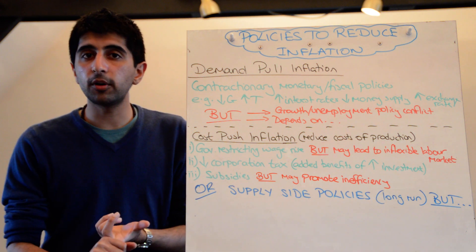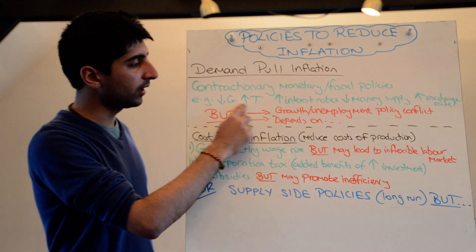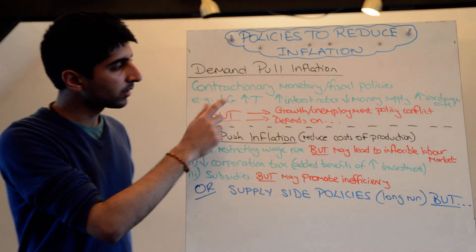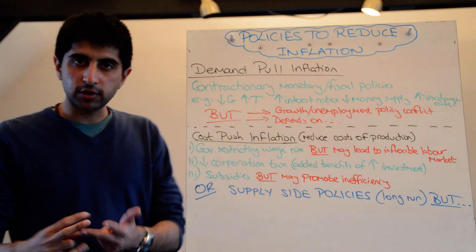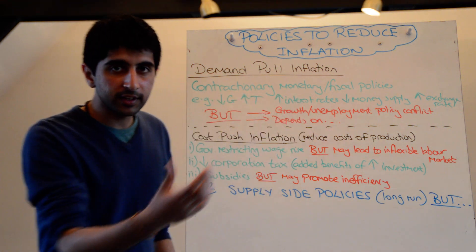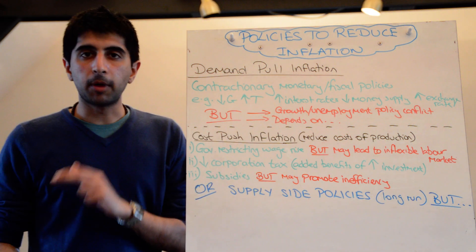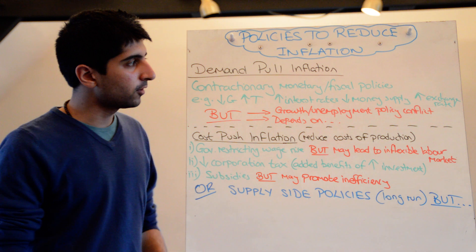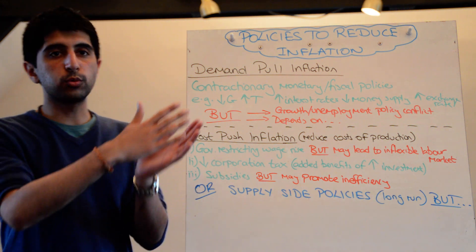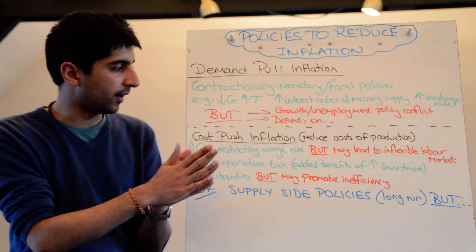Contractionary fiscal policies involve either increasing taxation or reducing government spending. Contractionary monetary policy involves increasing interest rates, reducing the money supply, or making the exchange rate stronger — all of which will reduce aggregate demand.